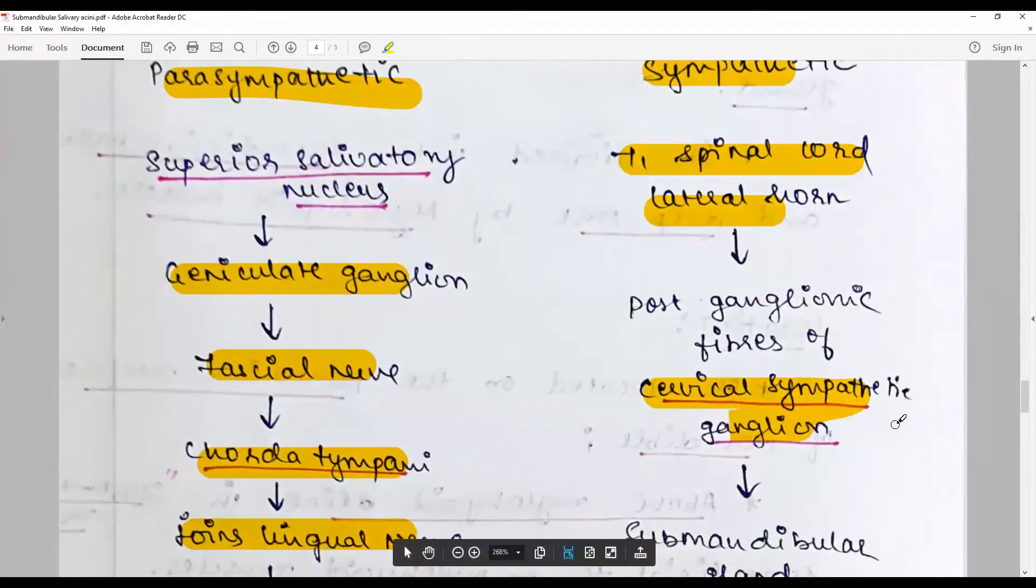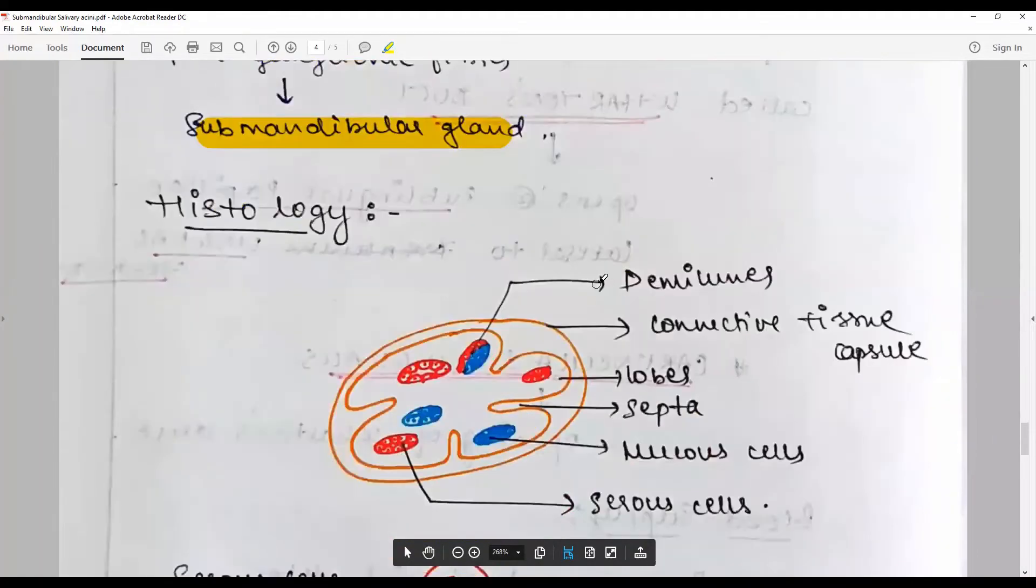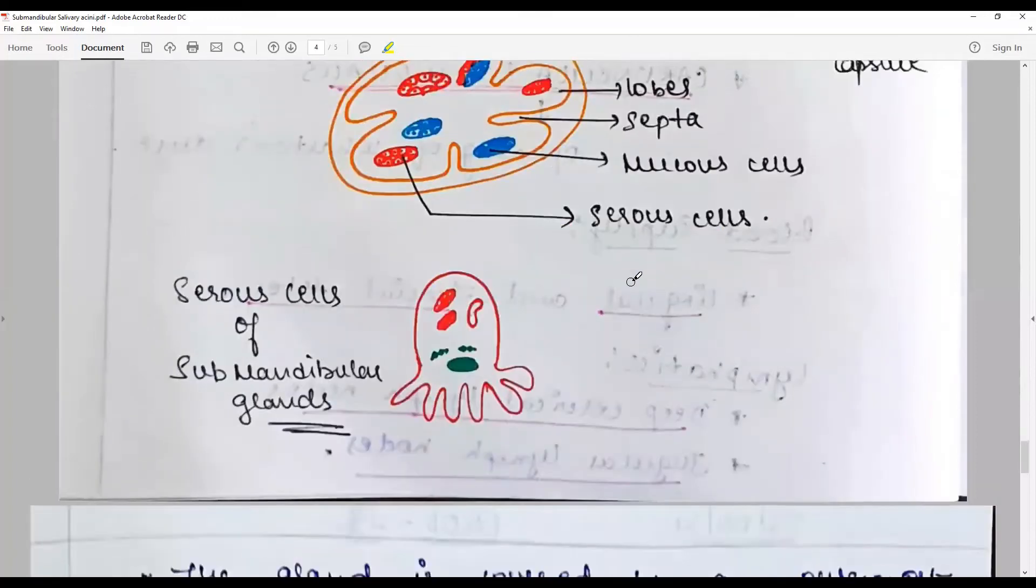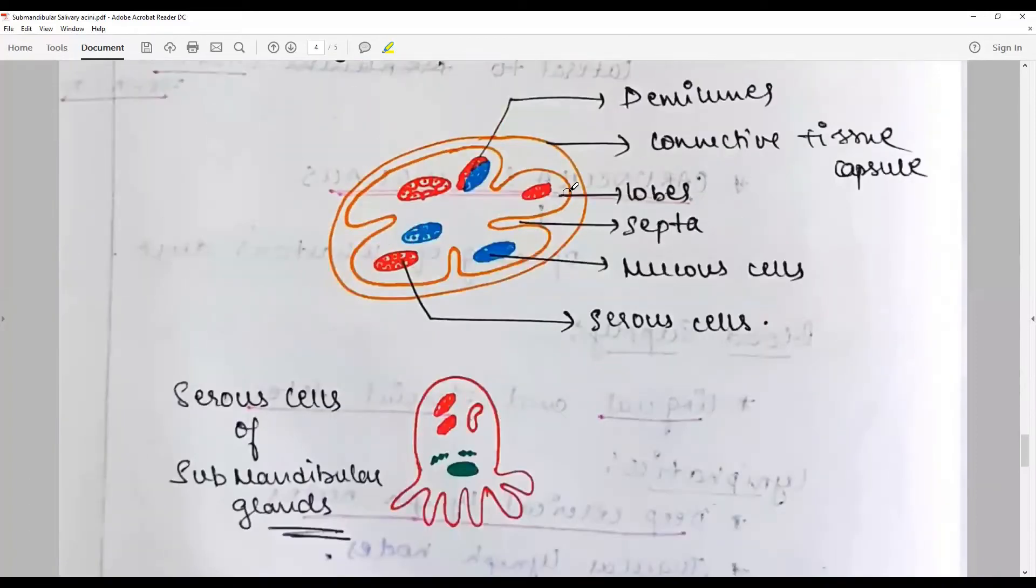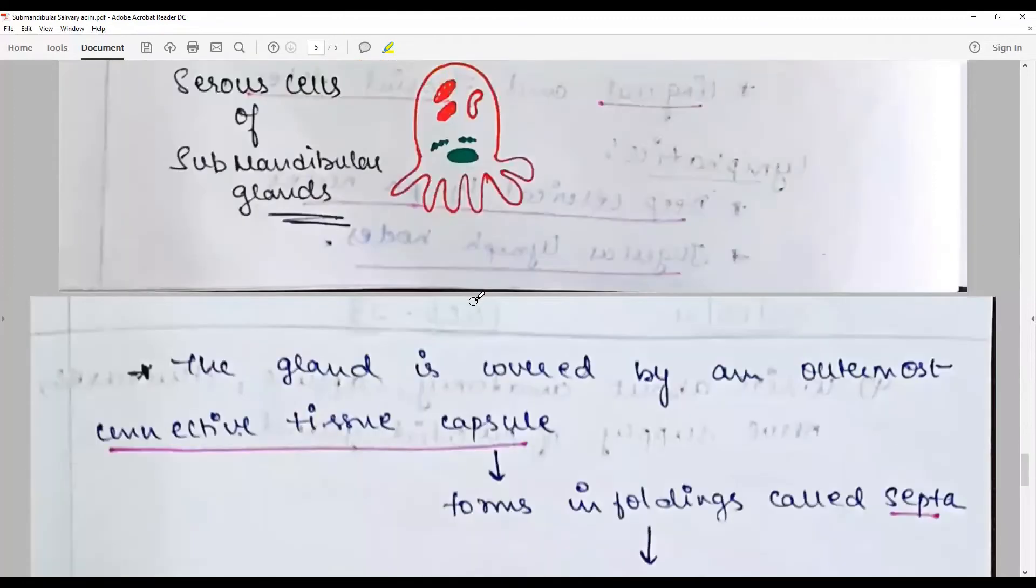Histology: the gland has a connective tissue capsule and there are septa invaginations dividing the entire gland into lobes. Inside the lobes you find both serous and mucus glands. You find structures called demilunes - the serous cells of submandibular glands.